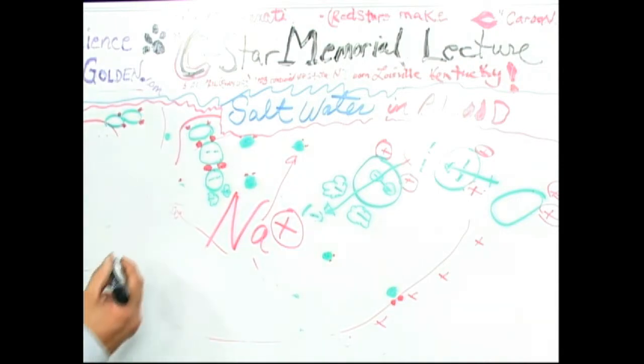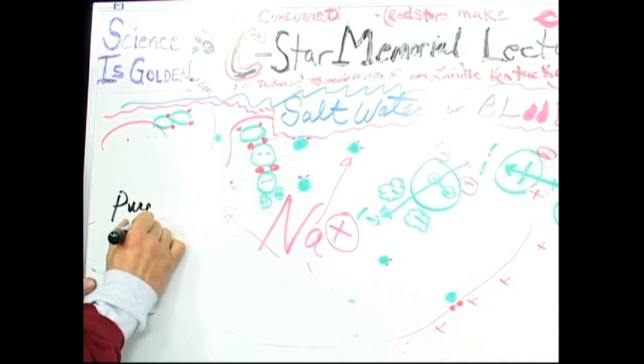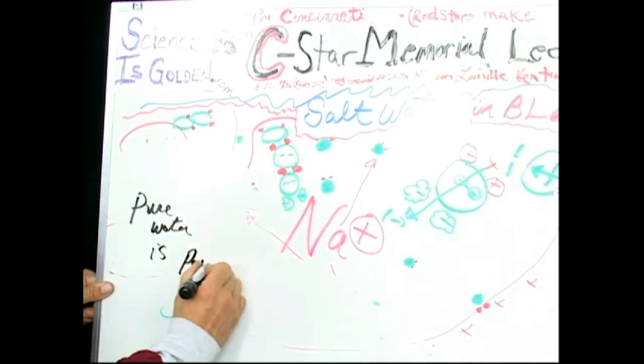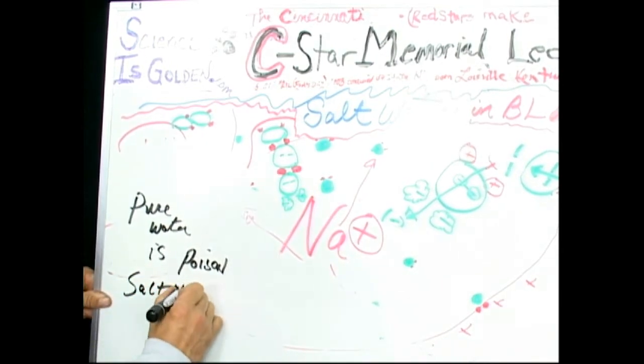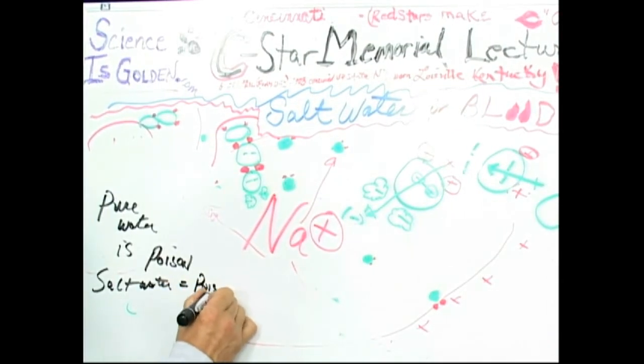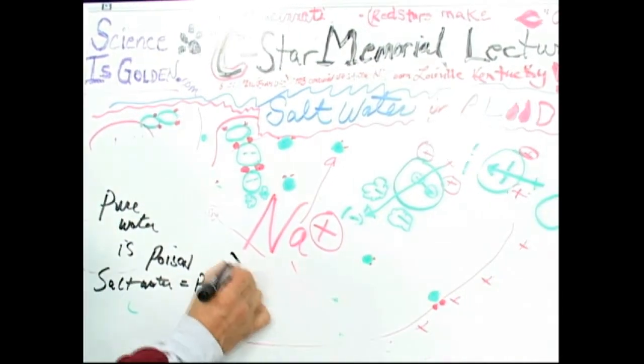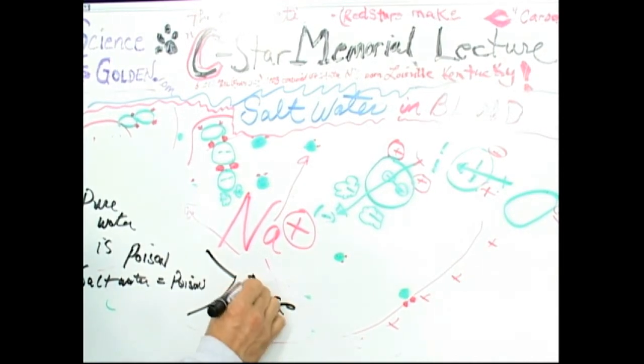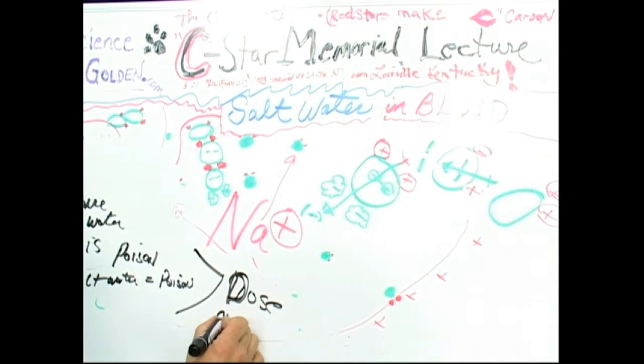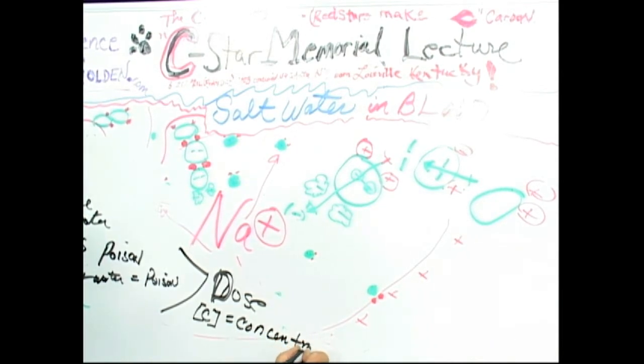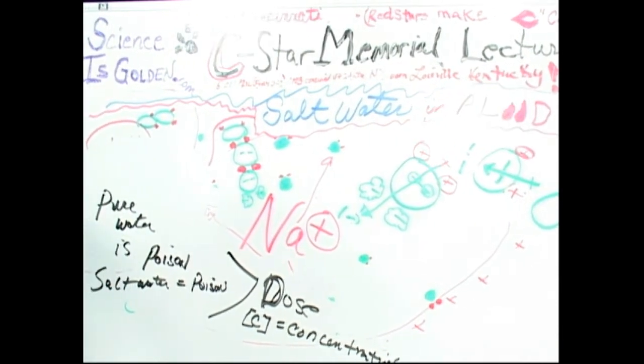So deionized pure water - pure water is poison. And salt water is poison. So you need to learn chemistry because it's the dose. Chemists use a little 'c' in brackets - concentration. It's all about the concentration of it.